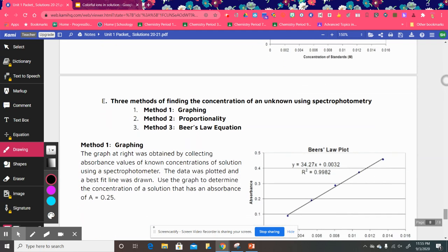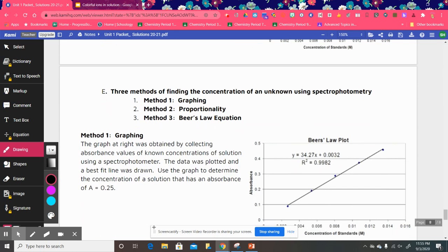So we have three methods of finding the concentration of an unknown using spectrophotometry. One is the simple method of graphing. We can use proportionality or we can use the actual Beer's Law equation.